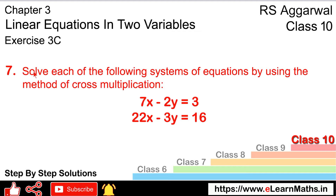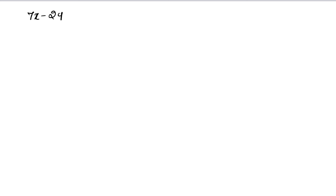Let's do question number 7 of exercise 3c, that is linear equations in 2 variables. Question number 7 is: solve each of the following system of equations by using the method of cross multiplication. We have to solve both equations with the cross multiplication method. Our first equation is 7x minus 2y equals 3, and the second equation is 22x minus 3y equals 16.